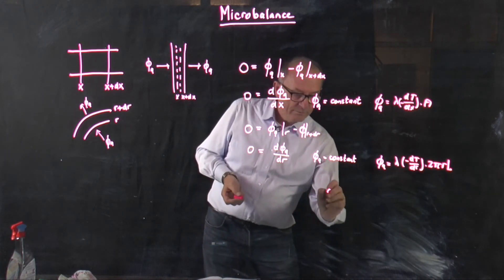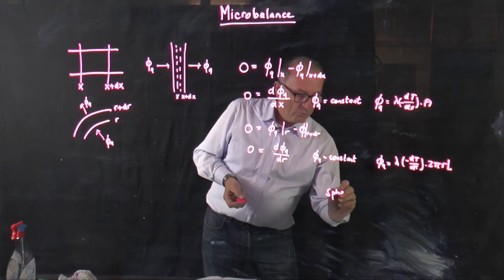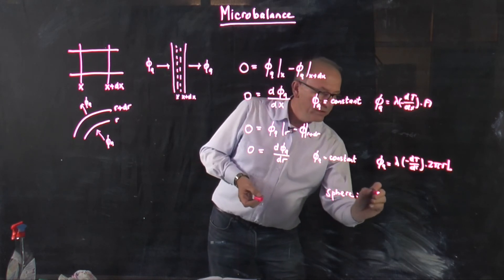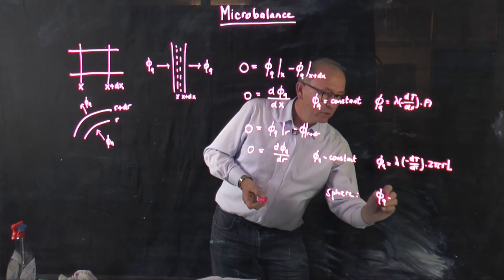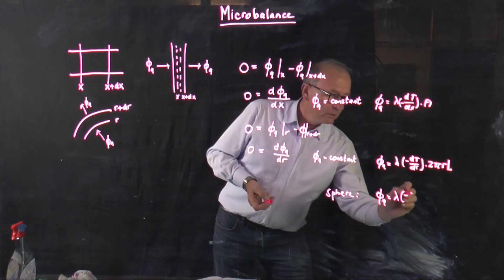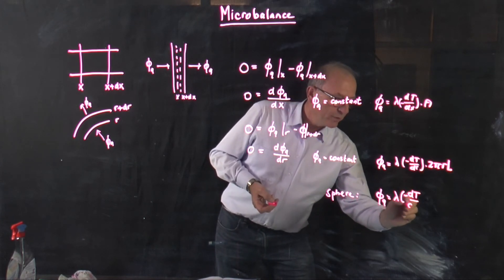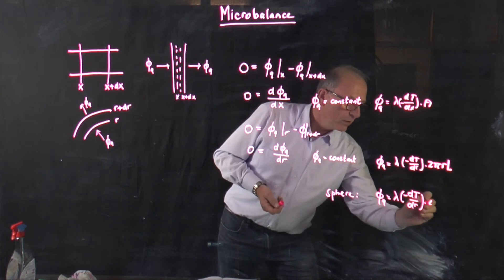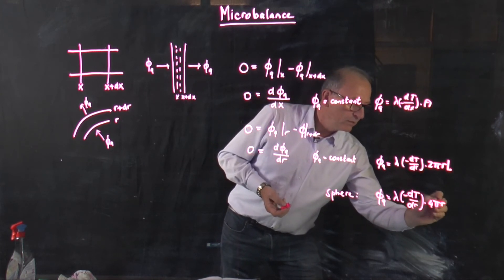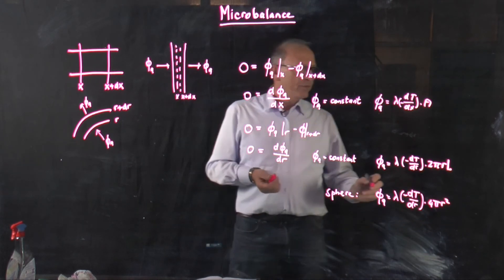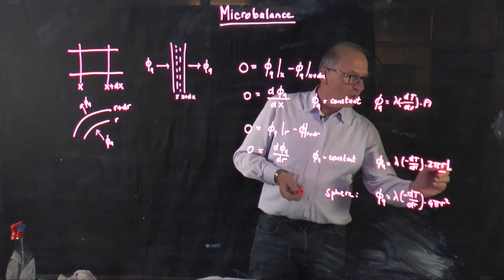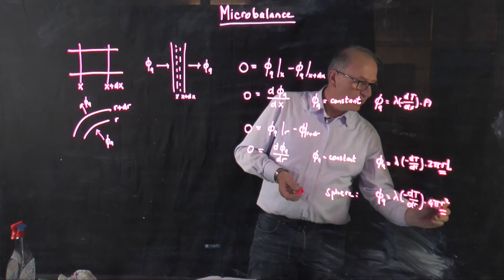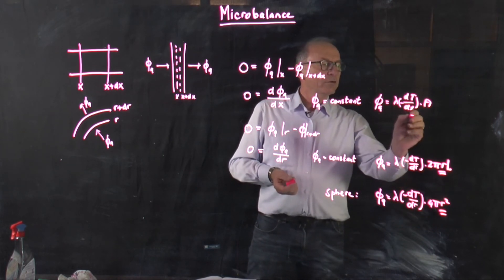And if you do it for a sphere you get phi q is a similar equation. But now we have the surface of a sphere in it. So you see different dependencies. Here you see an r dependency, an r squared dependency, and here only your x dependency. So if you solve these equations you will see that you get three different temperature profiles.